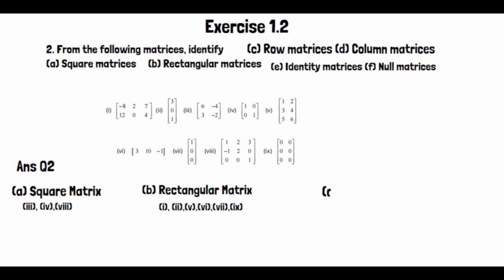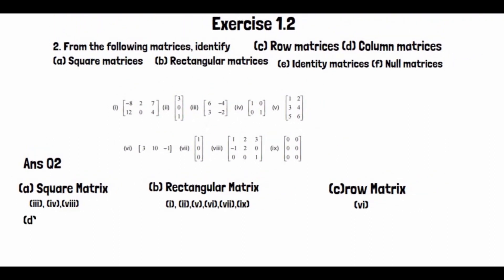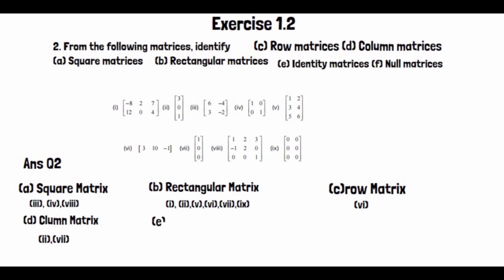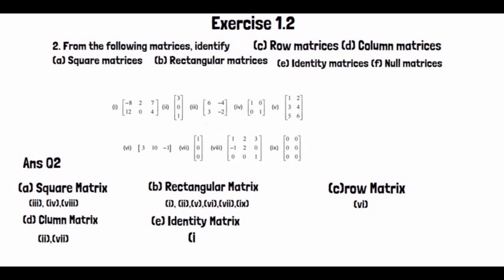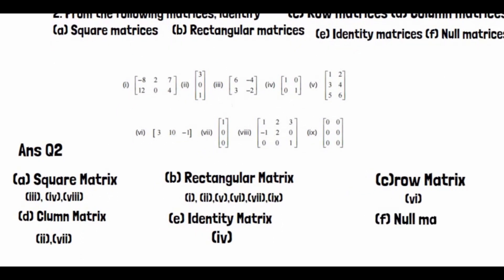Category C is row matrices — a matrix which has only 1 row. Category D is column matrices — a matrix which has only 1 column. The relevant parts are identified accordingly.